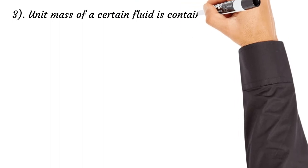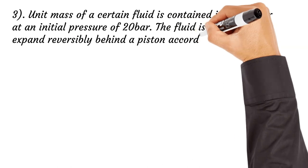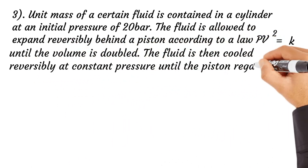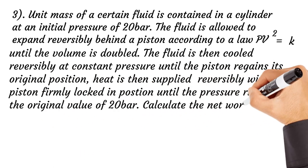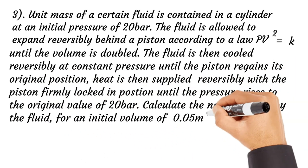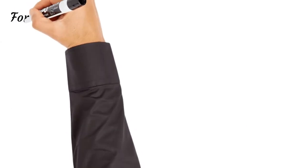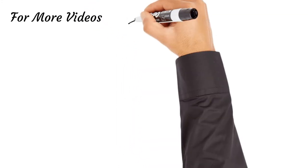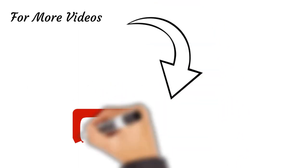Exercise 3: a certain fluid is contained in a cylinder at an initial pressure of 20 bar and is allowed to expand according to the law PV = constant until the volume is doubled. Calculate the net work of the fluid. Ensure you subscribe to this channel — thanks for being a part of the class.